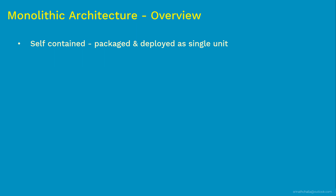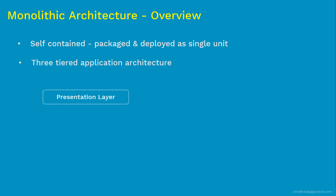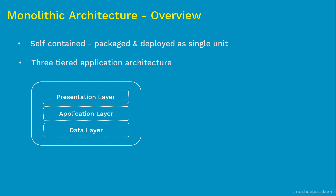Typically when you look at monolithic architecture it primarily consists of three tiers. It has a presentation layer on top, underneath that we have an application tier, and at the bottom we have a data tier. The presentation tier is the front-end layer — it is primarily the user interface of a web application. This tier is often built with web technologies such as HTML, JavaScript, CSS, or other popular web development frameworks, and it communicates with the other two tiers using API calls.